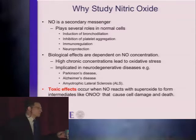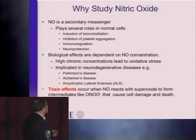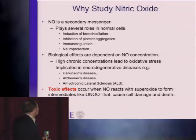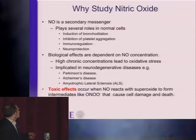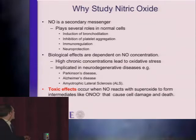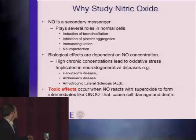Why study nitric oxide? It is a secondary messenger for a variety of events in the human body. It plays several different roles in normal cells, including induction of bronchodilation, inhibition of platelet aggregation, immunoregulation, and neural protection. The biological effects are dependent on the nitric oxide concentration. At low levels, you get positive things happening, but at higher levels, high chronic concentrations can lead to various types of oxidative stress.